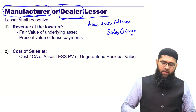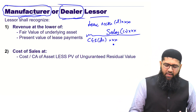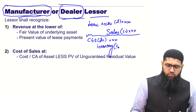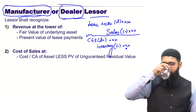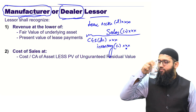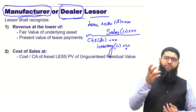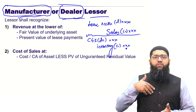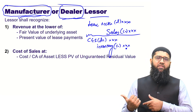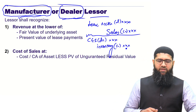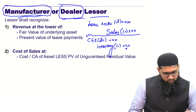You don't say non-current asset credit — you say sale credit. There is another accounting journal you also recognize: cost of goods sold is debited and correspondingly inventory is credited. So to recap: the manufacturer or dealer lessor recognizes lease receivable and a corresponding sale, and also recognizes cost of goods sold debited with inventory credited.